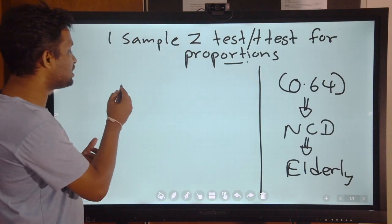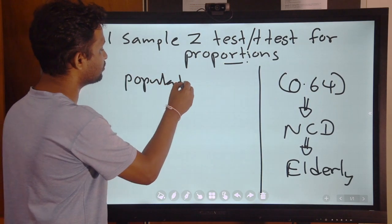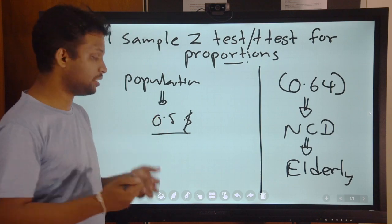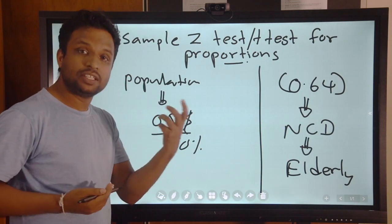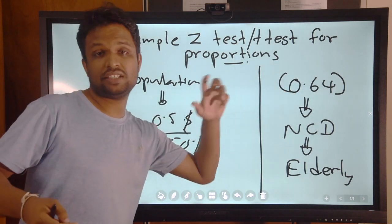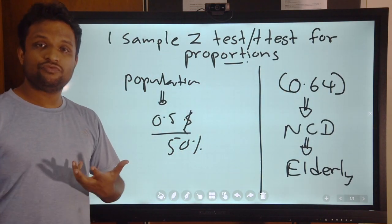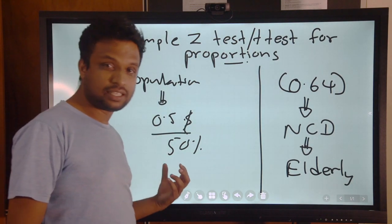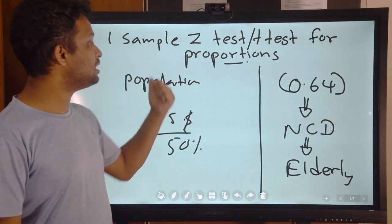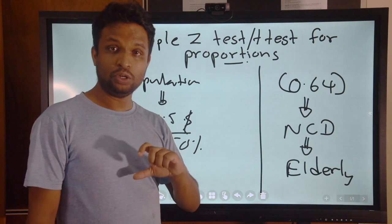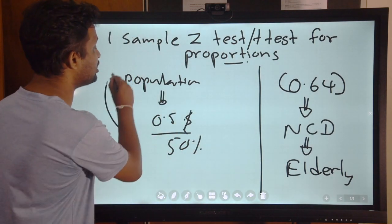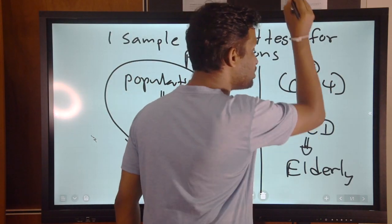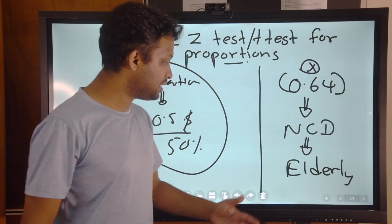Now assume that there is a specific population where proportion is 0.5, that means 50 percent of them are having disease, meaning 50 percent are healthy. Here it is only 36 percent are healthy. Now we are in doubt whether this 50 percent is significantly less than 0.64. This is one sample case because we are testing one population proportion against a fixed value. Assume that this is a fixed value, general acceptance.